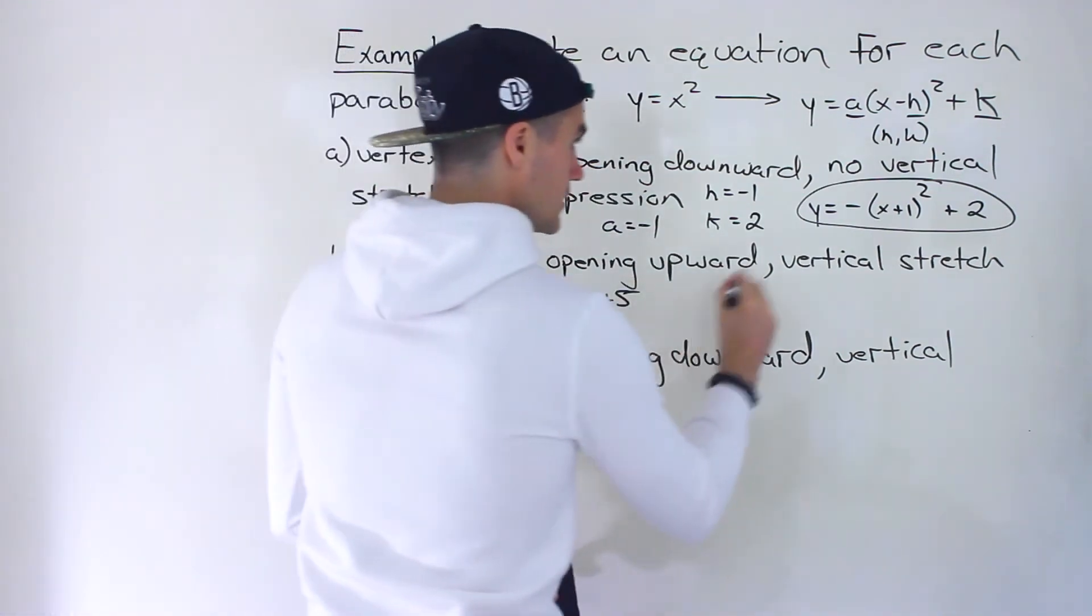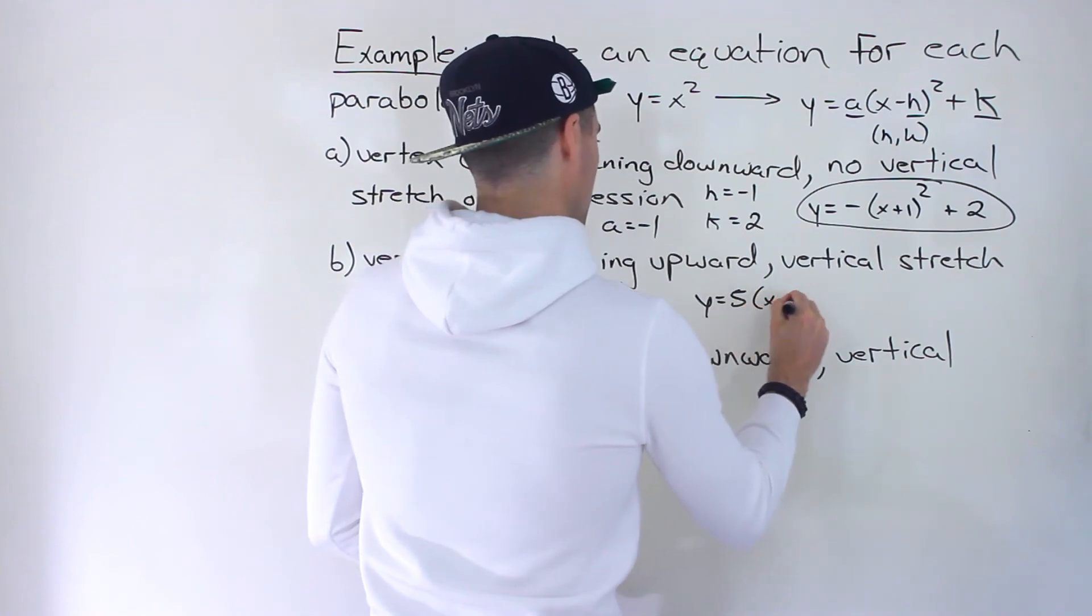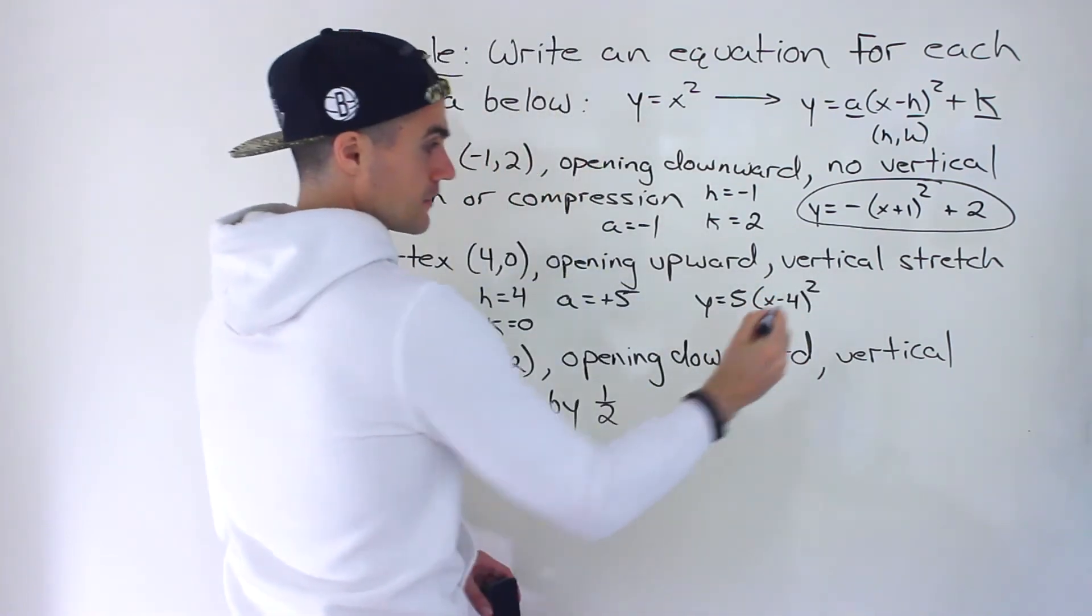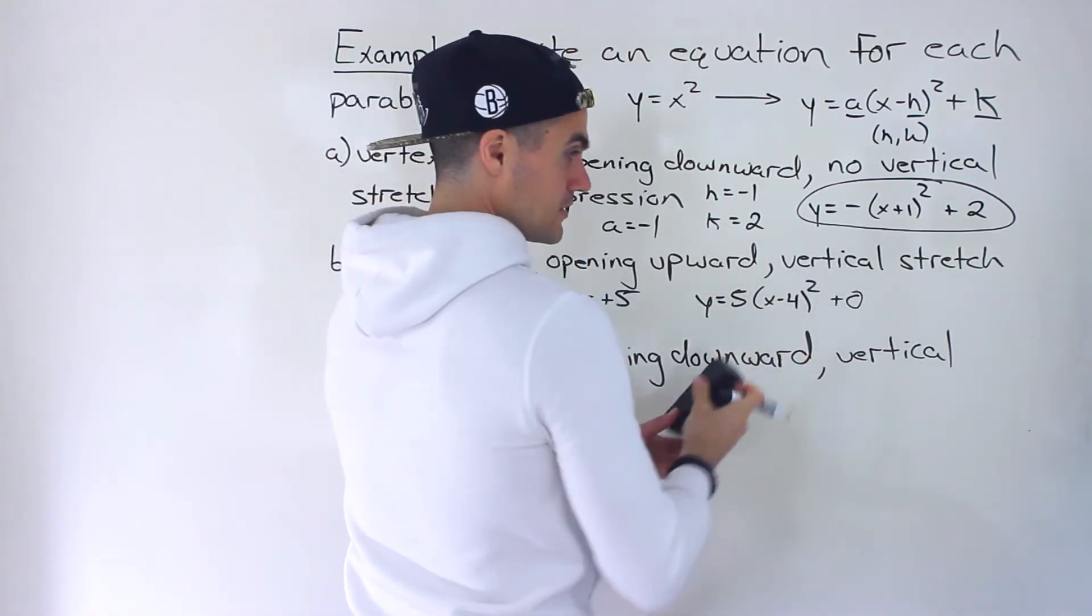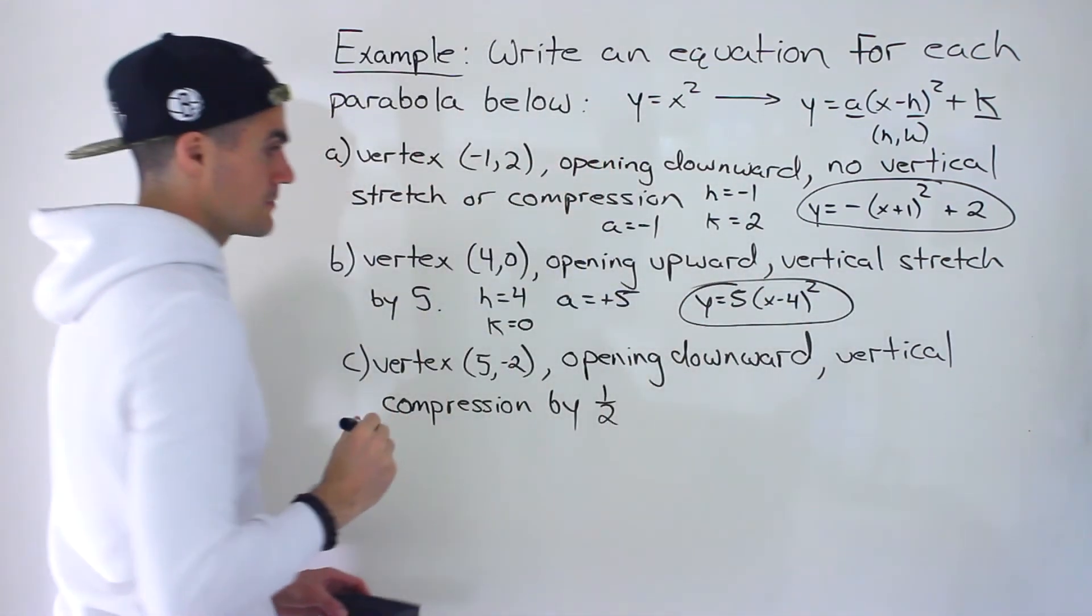So taking all this, plugging it into that format, we end up with that right there. There's like a plus zero at the end here, the plus K value, but we don't have to write that. So that ends up being part B.